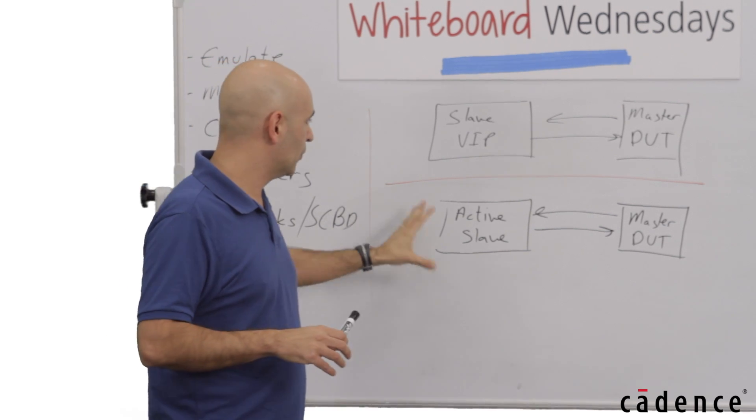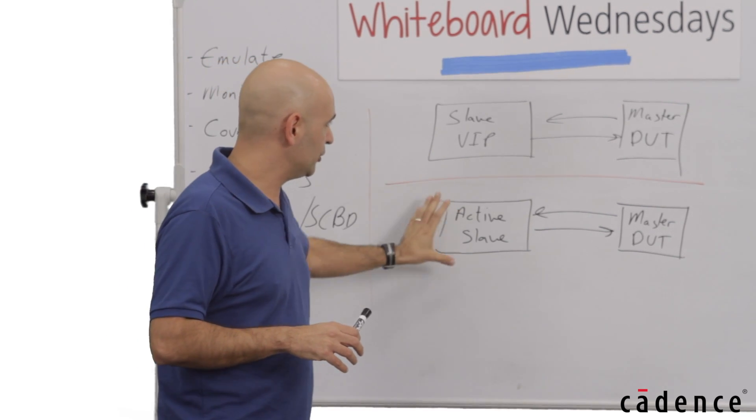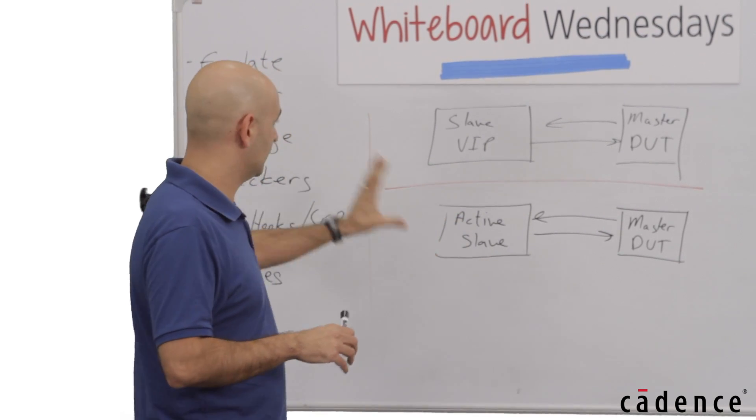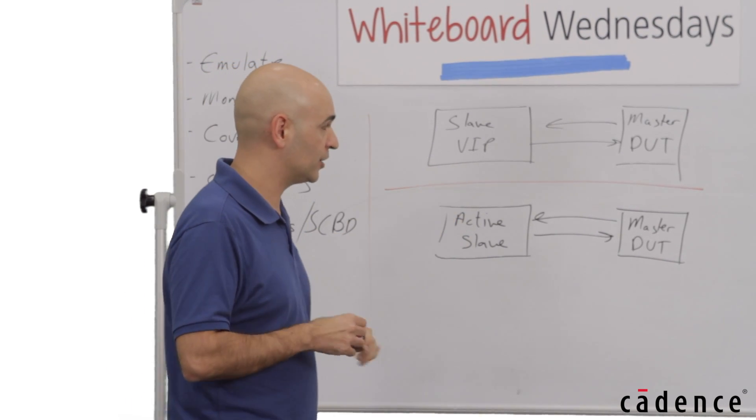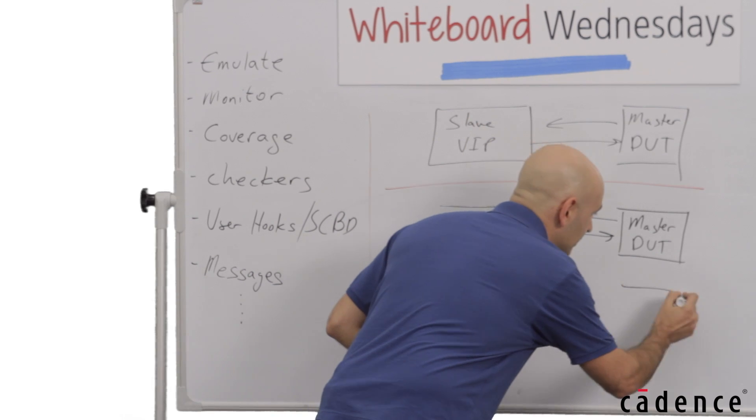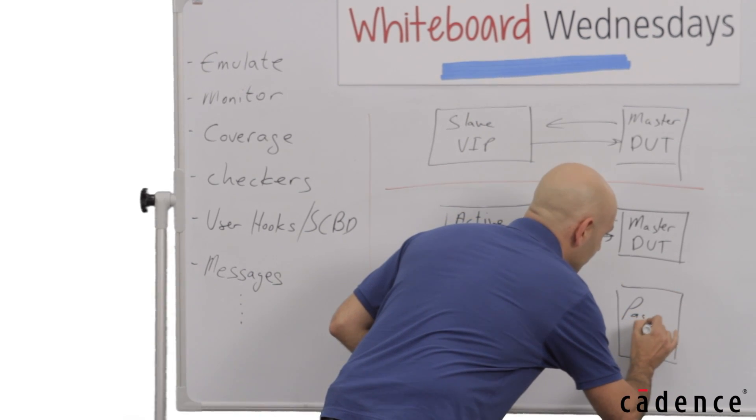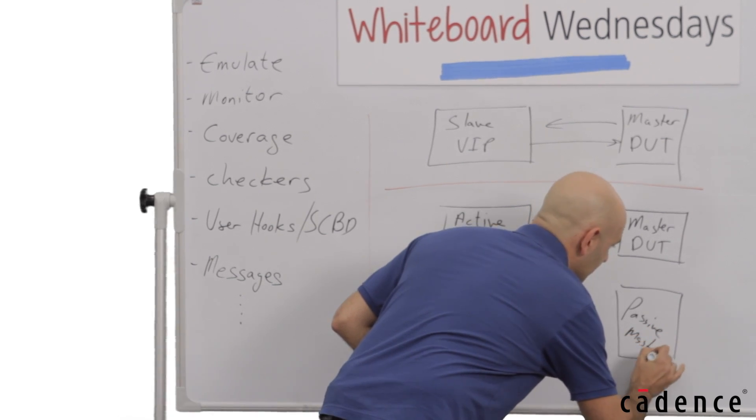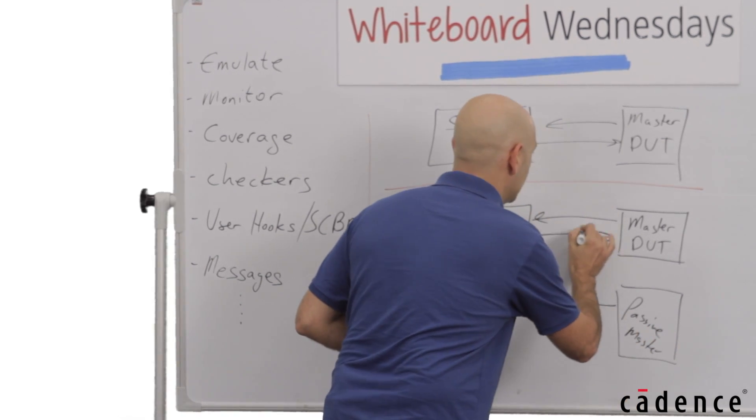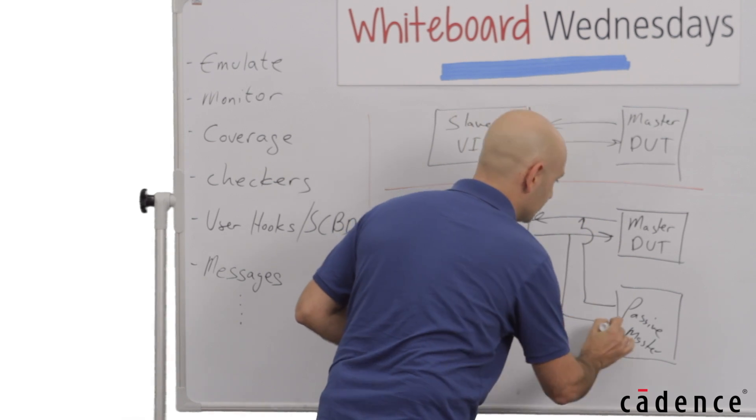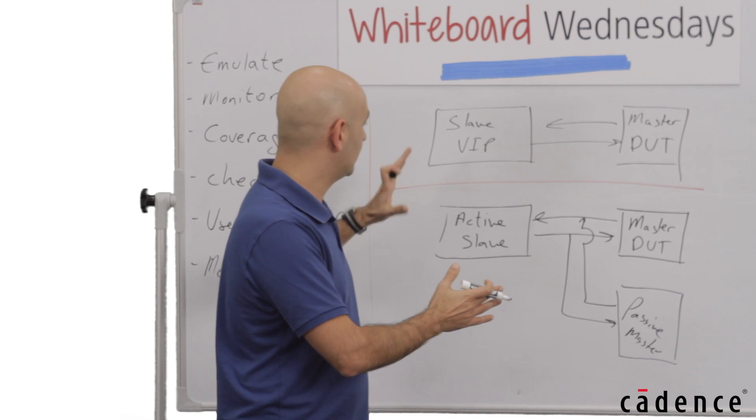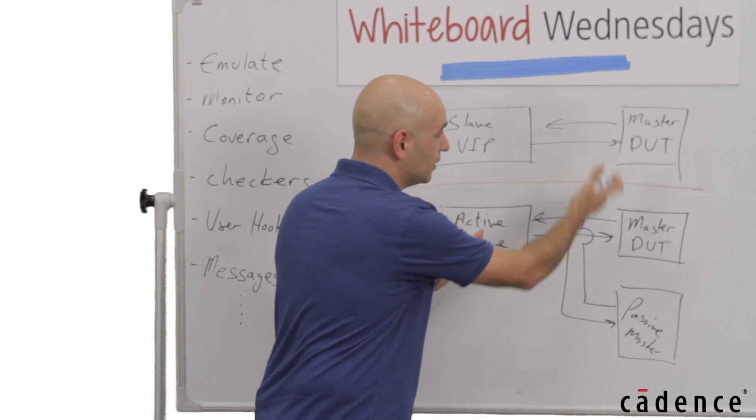The other approach is the modular approach, where the verification engineer basically instantiates an active slave that takes care of the slave emulation. But in addition, he instantiates a passive master and connects it exactly like his master DUT. So we basically separate the functionality of the device emulation and the DUT monitoring.